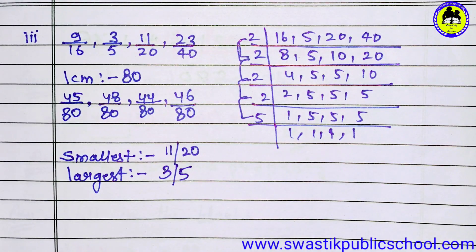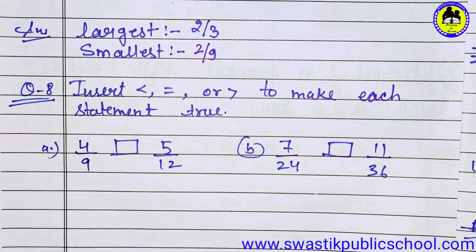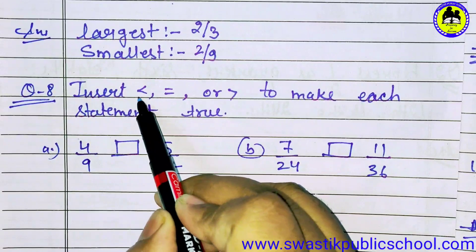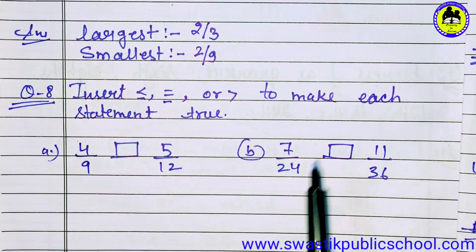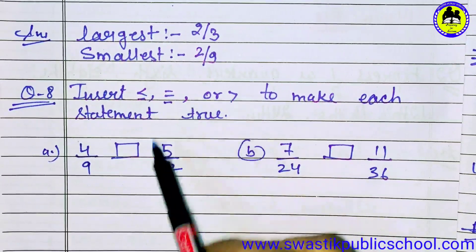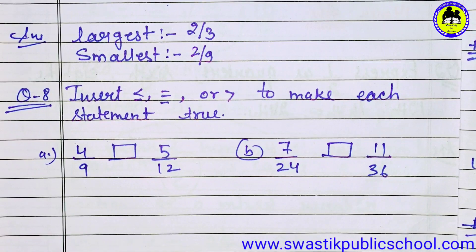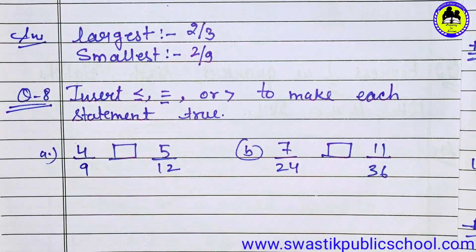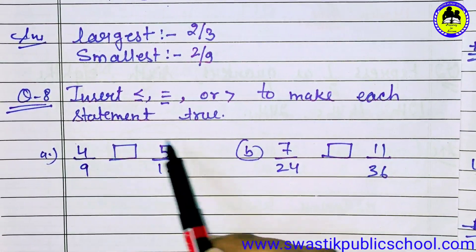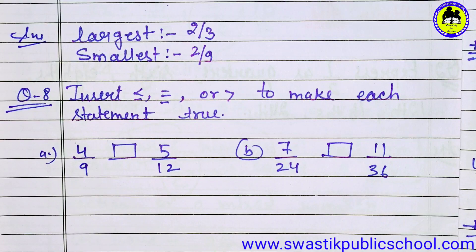Like this, the remaining fourth part you have to solve on your own. Now we will do the next question. In the next question, children, we have to insert symbols — less than, equal to, or greater than. We will use whichever symbol makes the statement true. We will do the first part; the second part you have to do. For this, we have two fractions given with a column between them, and we have to insert the symbol.